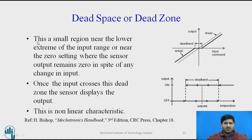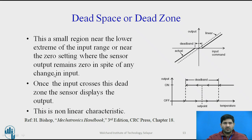Another characteristic is dead space or dead zone — a small region near the lower extreme of the input range, or often near the zero setting, where there is no change in output despite any change in input. This can sometimes be a desired feature if you do not want any spurious output; once the input crosses this dead zone, the sensor can display its output. This is also a non-linear characteristic.